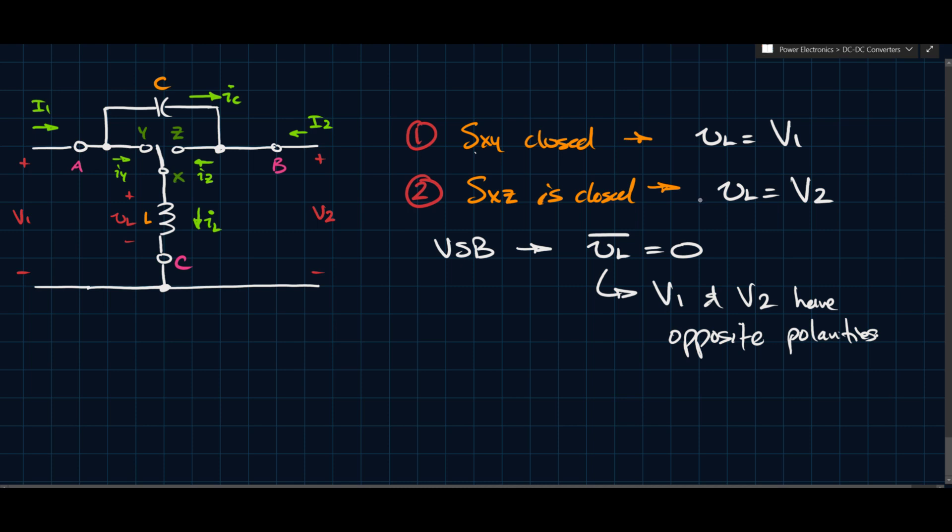So you have a similar property for the capacitor, as the volt-second balance called the capacitor charge balance. So the capacitor charge has to be zero over the entire, or the average capacitor charge has to be zero over the entire switching period. But you'll see that in one case, you'll see here, IC is equal to minus I2. And you'll see that here, IC is equal to I1. And that implies that I1 and I2 have to have the same polarity. Because if they don't, then you'll end up with the same issue that you had, violating the volt-second balance issue.